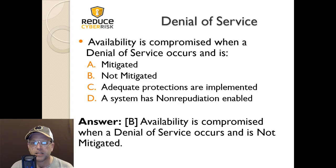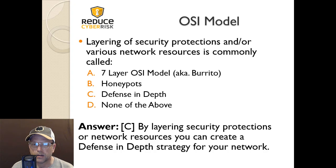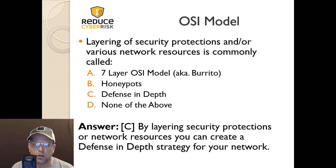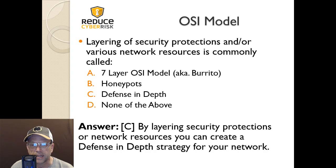You want to make sure the system stays available for everybody, so if you didn't mitigate the problem, that's why the denial of service occurred. Next: Layering of security protections and various network resources in the OSI model is commonly called — A) the seven-layer OSI model, B) honeypots, C) defense in depth, or D) none of the above. The answer is C. By layering security protections you create a defense in depth strategy, building multiple barriers and triggering alarms if someone gains access to your environment.